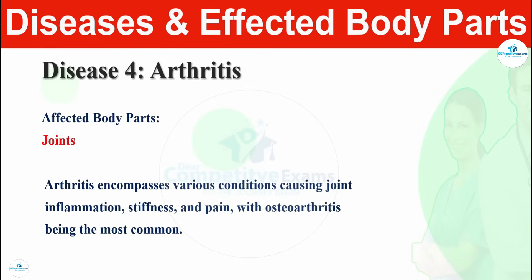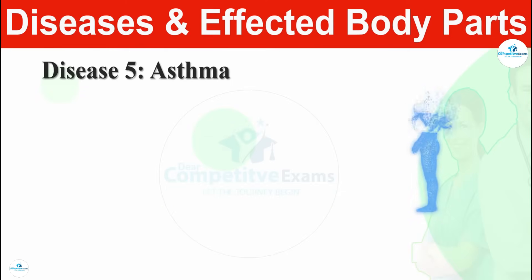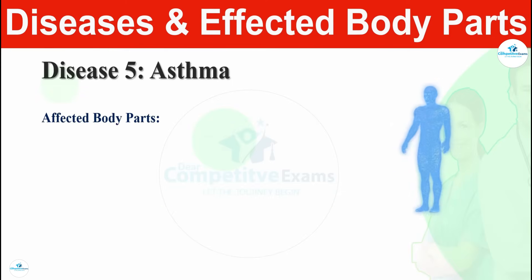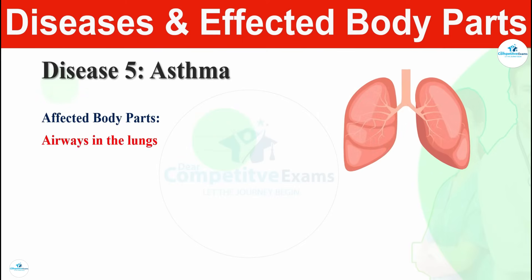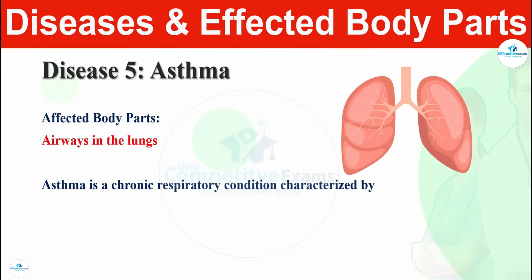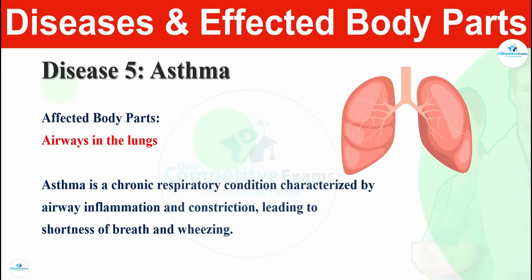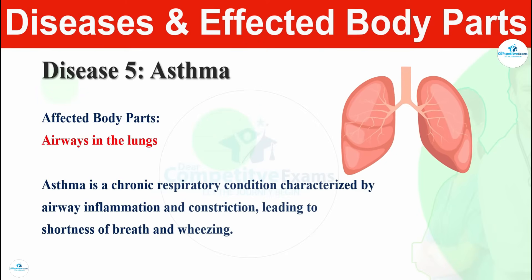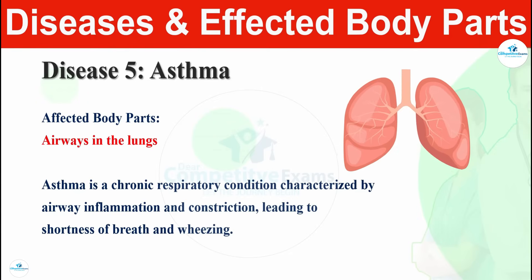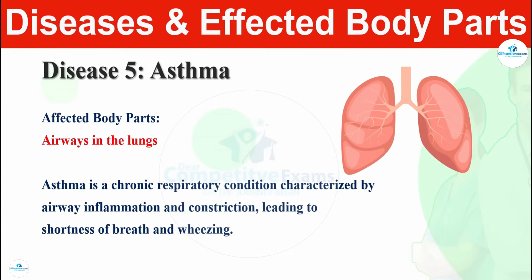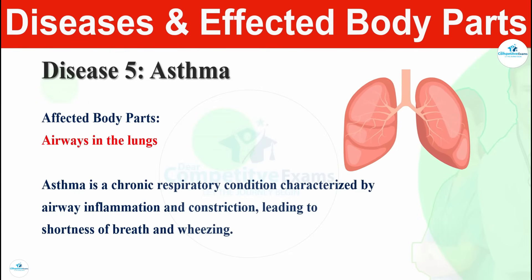The fifth disease is asthma. Asthma affects the airways in the lungs. Asthma is a chronic respiratory condition characterized by airway inflammation and constriction, leading to shortness of breath and wheezing. Asthma affects the airways in the lungs and can cause serious problems if not treated on time.